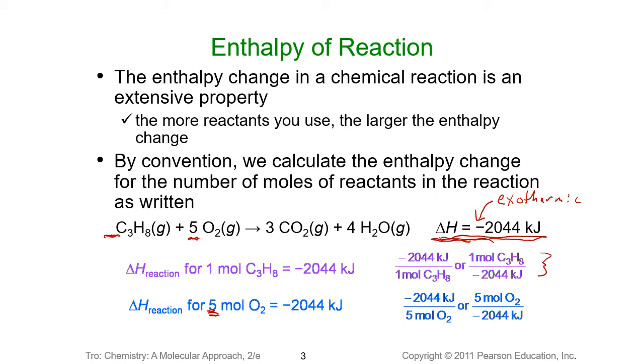And so we still get the negative 2044 kilojoules of heat produced, but it takes five moles of oxygen. So using the balanced chemical reaction and the enthalpy, this can become a conversion factor.